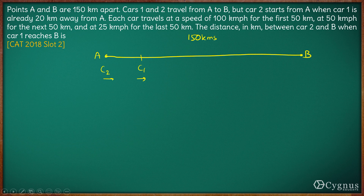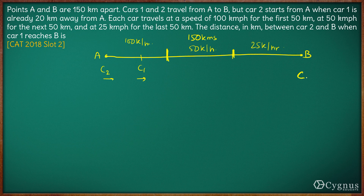Each car travels at a speed of 100 kilometers per hour for the first 50 kilometers, 50 kilometers per hour for the next 50 kilometers, and 25 kilometers per hour for the last 50 kilometers. We need to figure out when Car 1 reaches B, how far will Car 2 be?